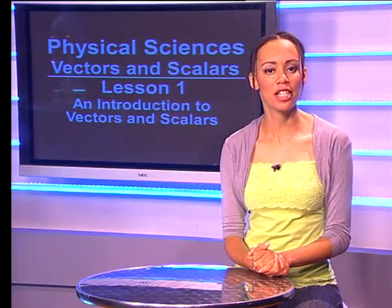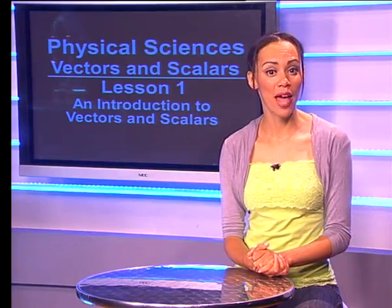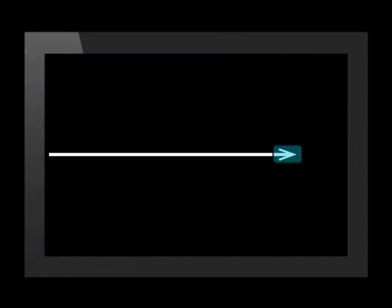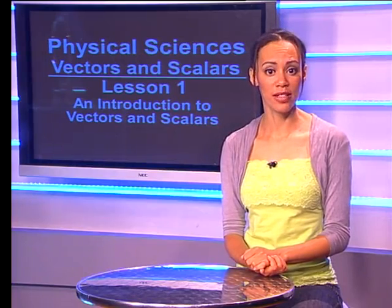When we work with a vector quantity, we can represent the vector by a line with an arrowhead on it. The line represents the magnitude of the vector and the arrowhead represents its direction. To represent the size of a vector we use a scale — for example, when representing force vectors, the scale tells us how many newtons each centimeter in the diagram stands for.